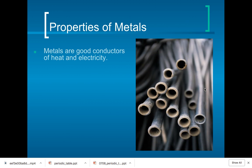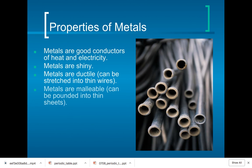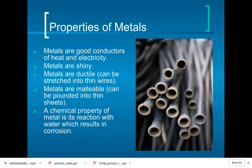Properties of metals: metals are good conductors, metals are shiny, metals are ductile — which means they can be stretched into long thin wires. Metals are also malleable, meaning they're able to be molded. A chemical property of metals is their reaction with water, which results in corrosion. Not all metals have that, but many metals have a corrosion factor.